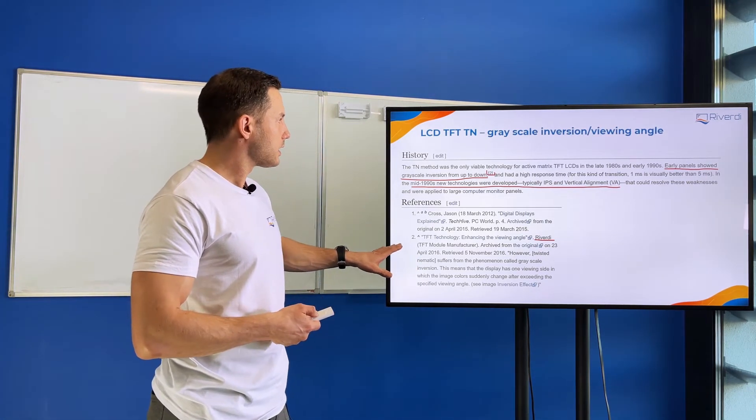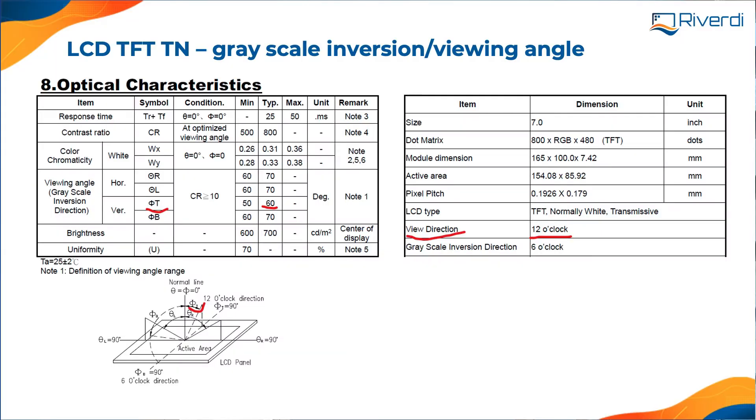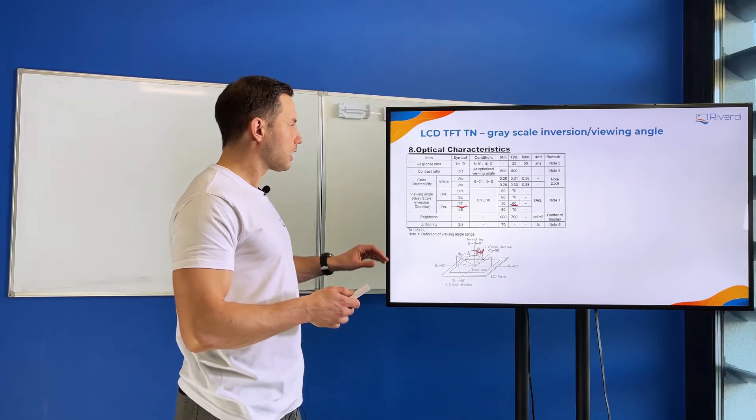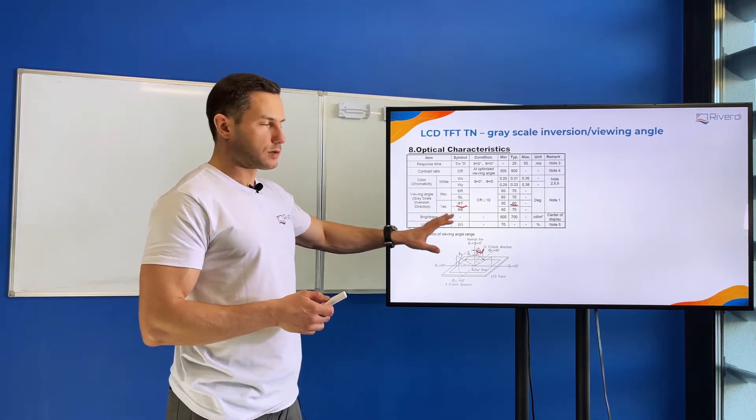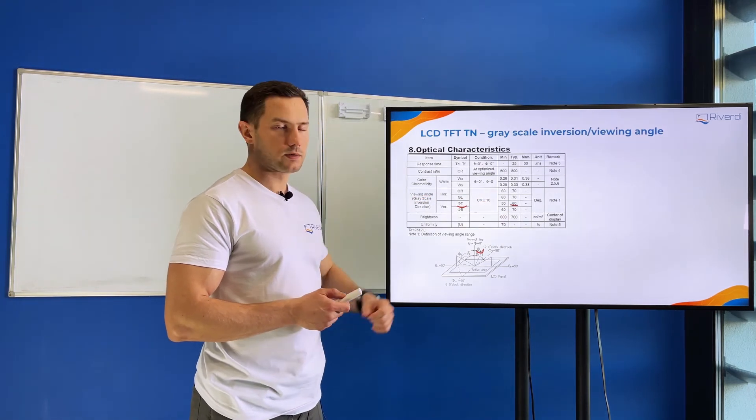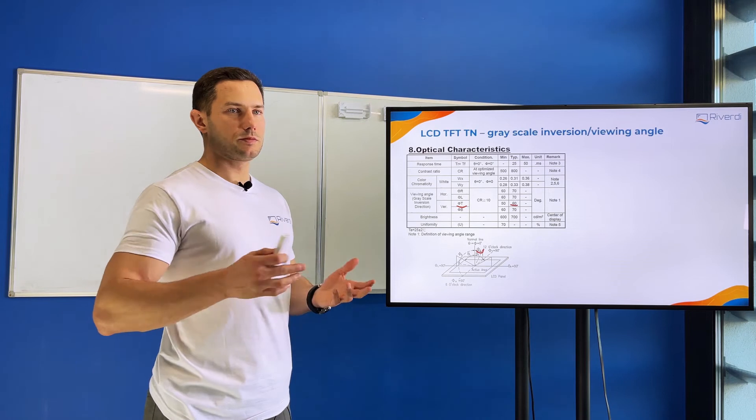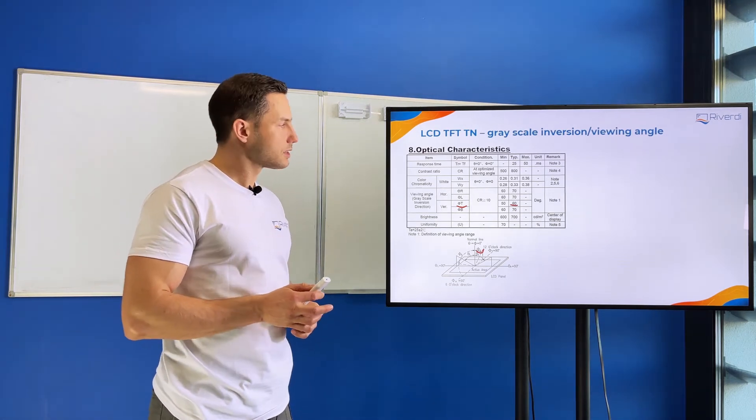As I said, it's tricky and you need to be very careful. What I'm showing here is part of an LCD TFT specification—a TN display specification. This twisted nematic display has the grayscale inversion phenomenon. If we go to the optical table, we'll see the viewing angles are defined as 70, 70, 60, and 70 degrees, which means the maximum viewing angle the user can see.